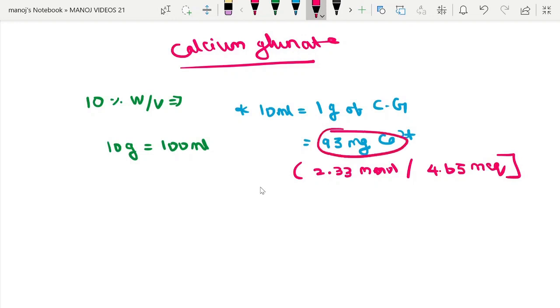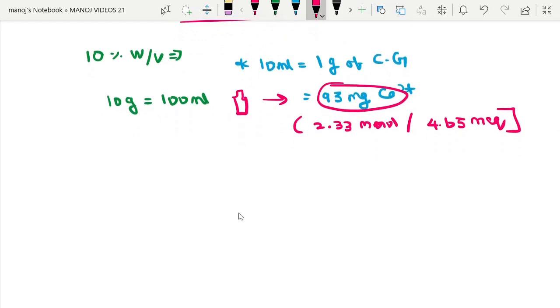One ampule of 10 ml calcium gluconate contains 93 mg of elemental calcium. How to give this in emergency conditions and in hyperkalemia: one ampule (10% W/V, 10 ml, approximately 90 mg calcium)